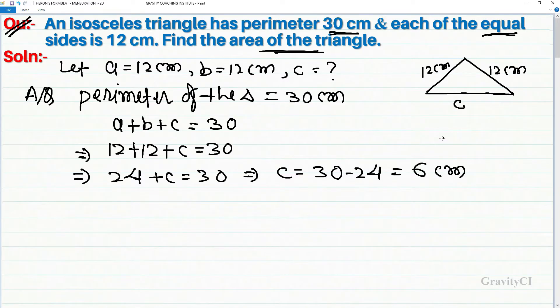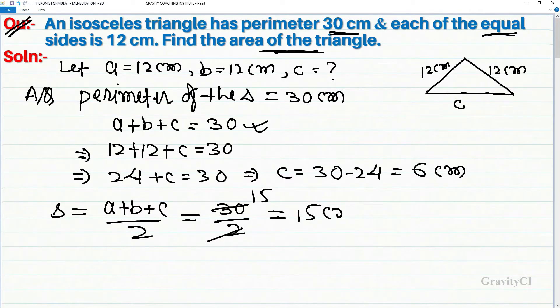So c equal to 30 minus 24 equal to 6 centimeter. So this triangle's sides are now found. Now for its area, we will use Heron's formula. For that, first we need to find semi-perimeter s equal to a plus b plus c upon 2, which equals 30 upon 2.